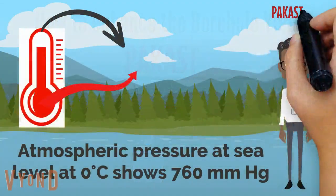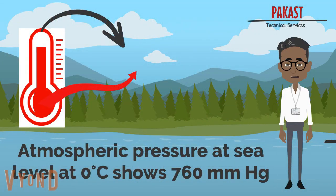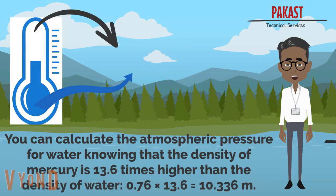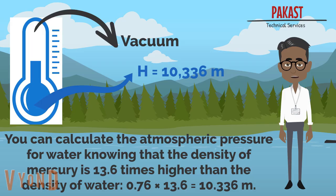Atmospheric pressure at sea level at a temperature of 0 degrees Celsius is considered to be 760 mmHg. Knowing the density of water and the density of mercury, you can find out that 760 mmHg are equal to 10 m 33 cm of water column. Knowing this, let's think about how you can increase the borehole yield.